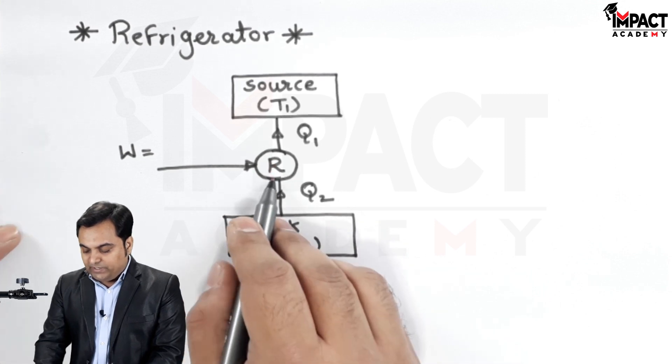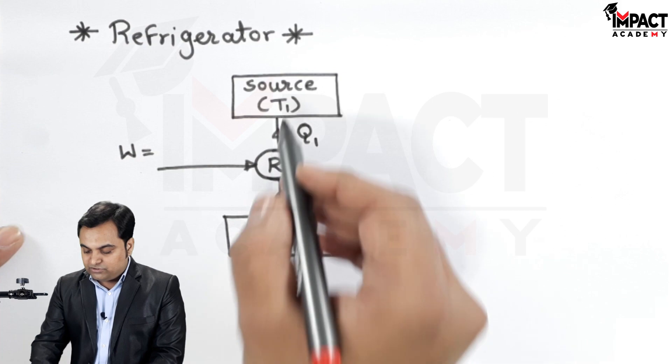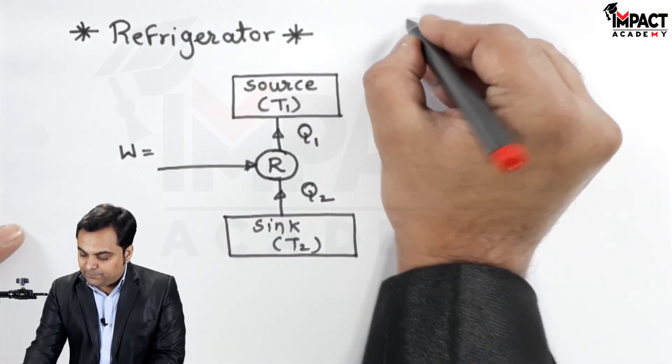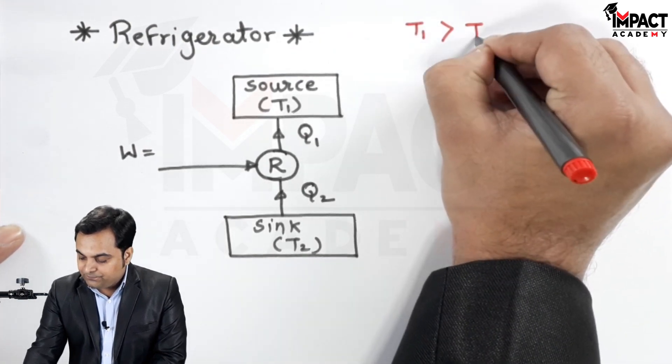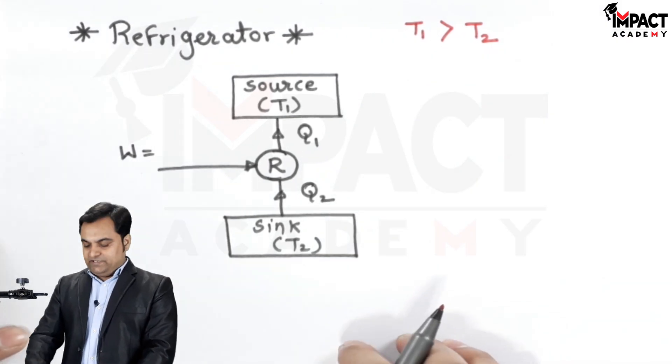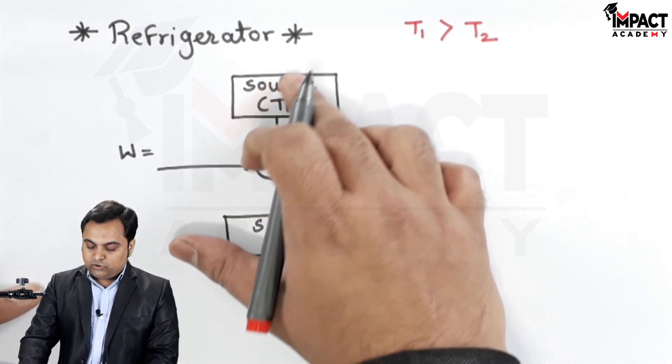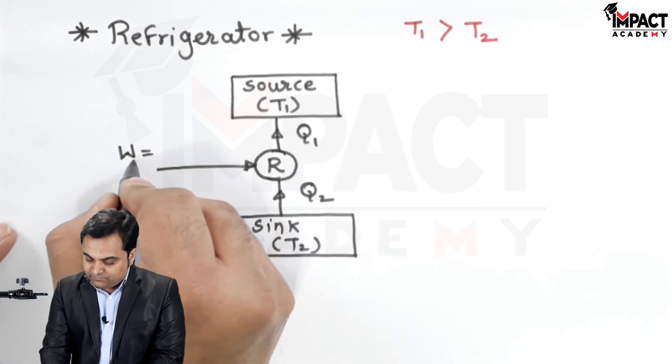This refrigerator is going to extract heat from the low temperature reservoir. Here we have two reservoirs, one is source other is sink. The source is having a greater temperature compared to the sink. So the refrigerator is extracting heat from the sink and delivering it to the source.